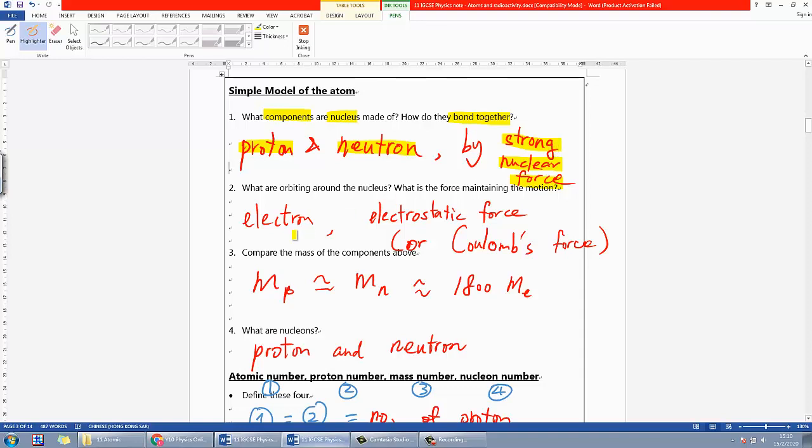Number two asks what's orbiting around the nucleus, and that is electrons. The force maintaining the motion is called electrostatic force, or some people call it Coulomb's force. This force maintains circular motion - recall in chapter 2 you learned about circular motion. Electrons are negative and protons are positive, of course neutrons are neutral. So electrons and protons have opposite charges and attract each other, so electrons orbit around the nucleus.